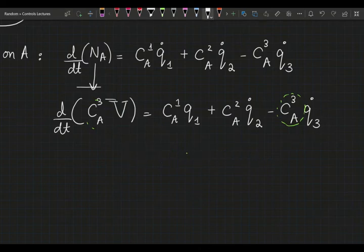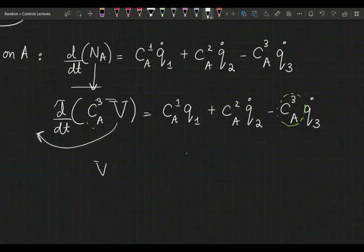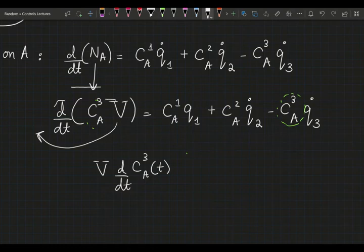Volume is constant, volume has to remain constant. So I can just take the volume out of the derivative. I'm gonna add this t in parentheses to signify that this variable can change with time.